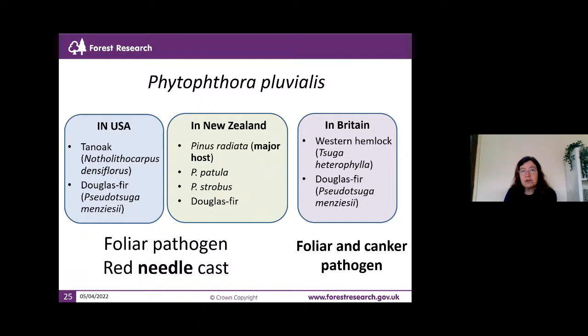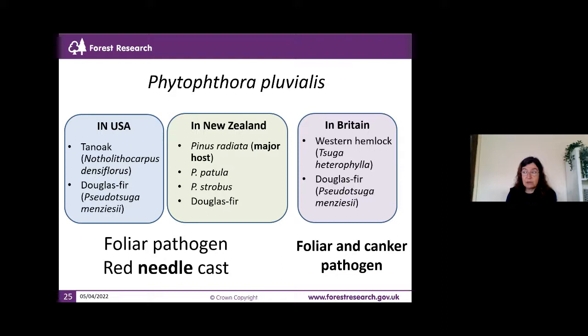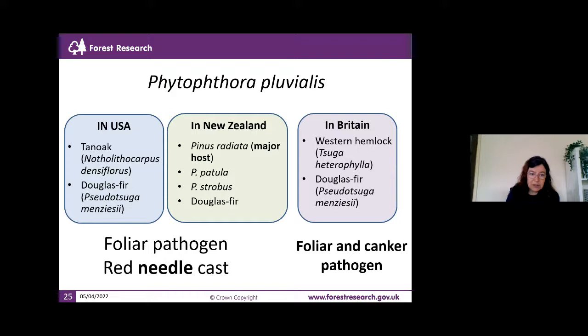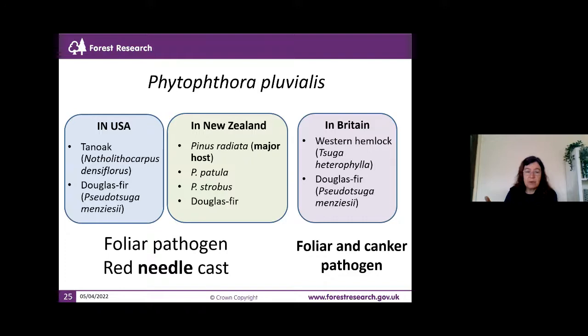We are doing research to look at the origin of Phytophthora pluvialis, and research to see when it colonizes the bark how deep it goes, so we can recommend the best management action. We are also looking at the susceptibility of other tree species to Phytophthora pluvialis, since western hemlock was a new host — are there any other susceptible species? We are doing monitoring on affected sites with rainwater traps to monitor the inoculum, stream baiting to monitor presence in water streams, and testing samples. Thank you very much.